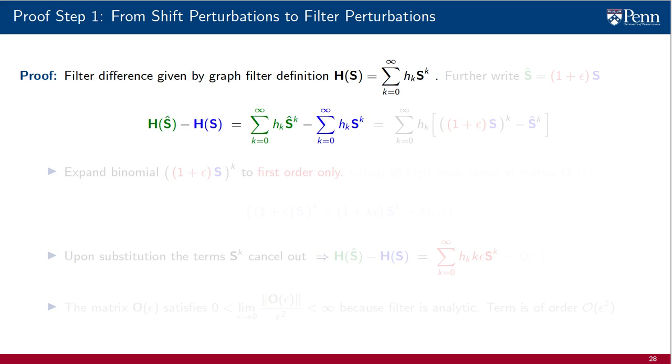We have a difference of two polynomials, one on Ŝ, one on S. We further write Ŝ as (1 + ε) times S, which is the definition of the perturbed shift, and regroup all of the terms in a single sample.